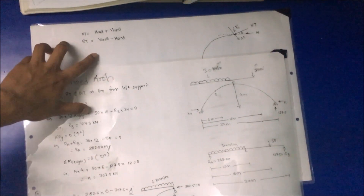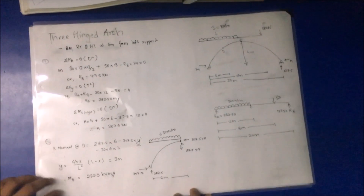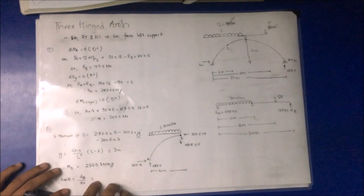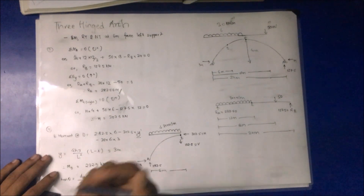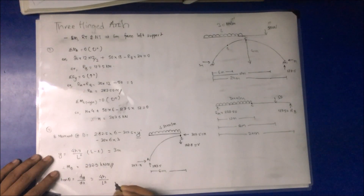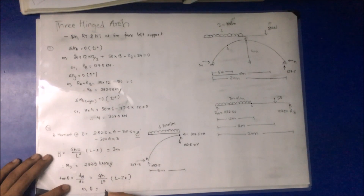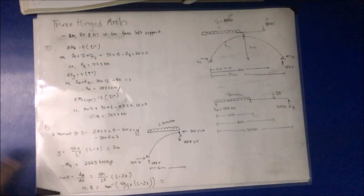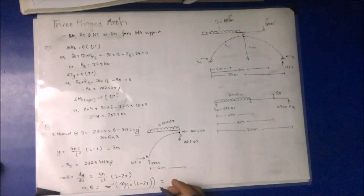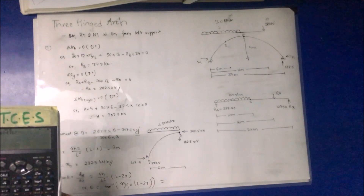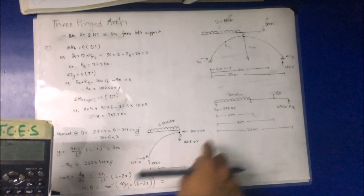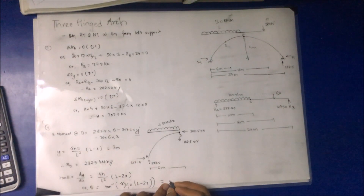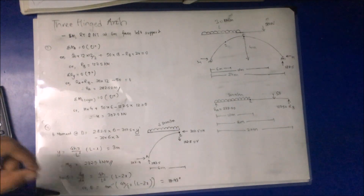To find theta at x = 6 m: tan θ = 4H / L² · (L − 2x) = 4 × 4 / (24²) × (24 − 12) = 0.333. Therefore θ = tan⁻¹(0.333) = 18.43 degrees.